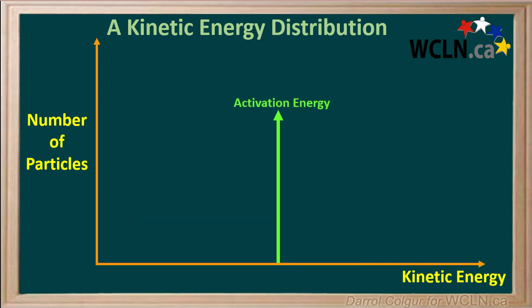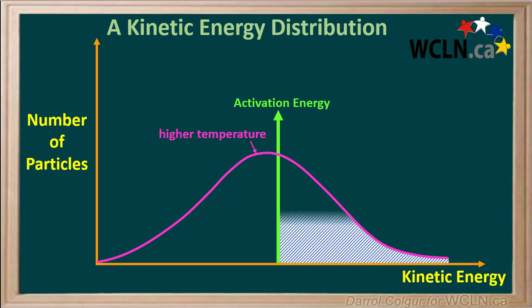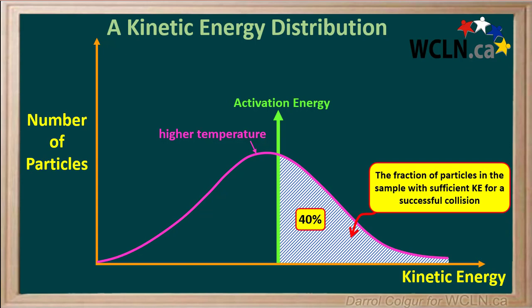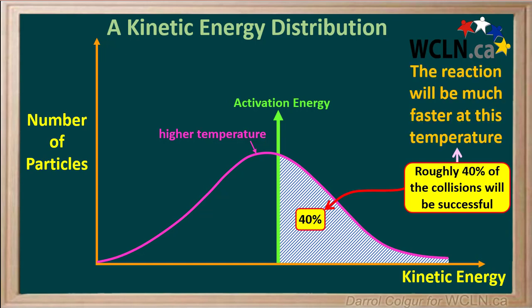Now we'll keep the activation energy the same and show the curve or distribution at higher temperature. The area under the curve above the activation energy represents the fraction of particles with sufficient kinetic energy for a successful collision at this higher temperature. We can estimate that this area is roughly 40% of the total area under the curve. So roughly 40% of the collisions will be successful, meaning the reaction will be much faster at this temperature than at the lower temperature where only a little over 5% were successful.